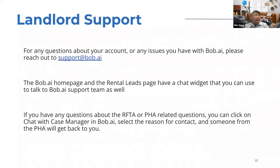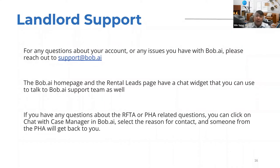For landlord support, reach out with any account questions to support@bob.ai. You can also reach us through the chat function on the app. The Bob.ai homepage and rental leads page have a chat widget. For RAFTA or PHA-related questions, click 'Chat with the Case Manager' — it will ask you to select a reason such as inspection or RTA, and the PHA case manager will get back to you directly through the app.